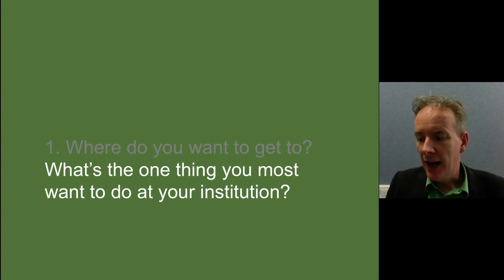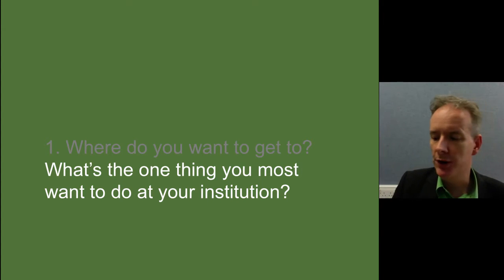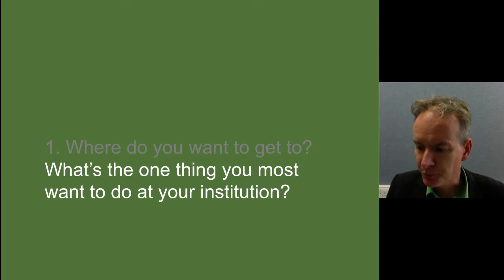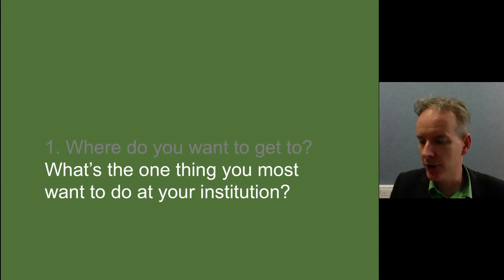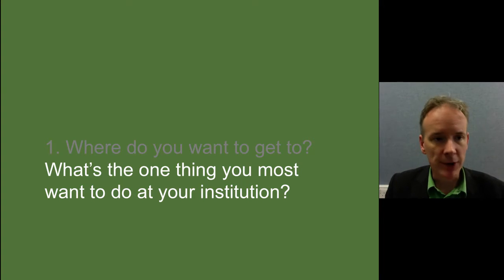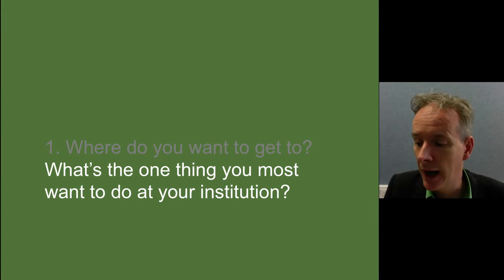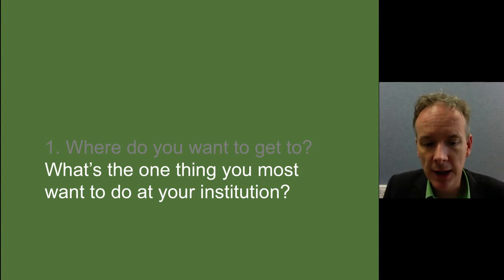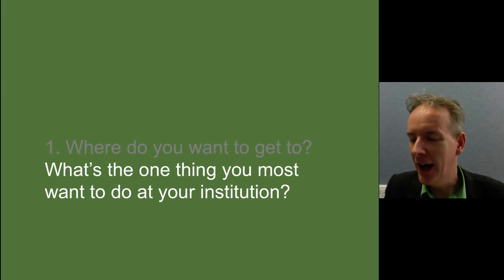Now comes the interactive bit. What I want you to do is write down the one thing you most want to do at your institution. This is about thinking about where you want to get to. It could be something really big — a large-scale analytics infrastructure, a data warehouse, a data viz analytics suite. Or it might be something really small — a small exercise in a couple of lectures, or getting students their marks quicker. I want you to pause the video now and write down your answer. I'm going to assume that you have paused the video and carry on.